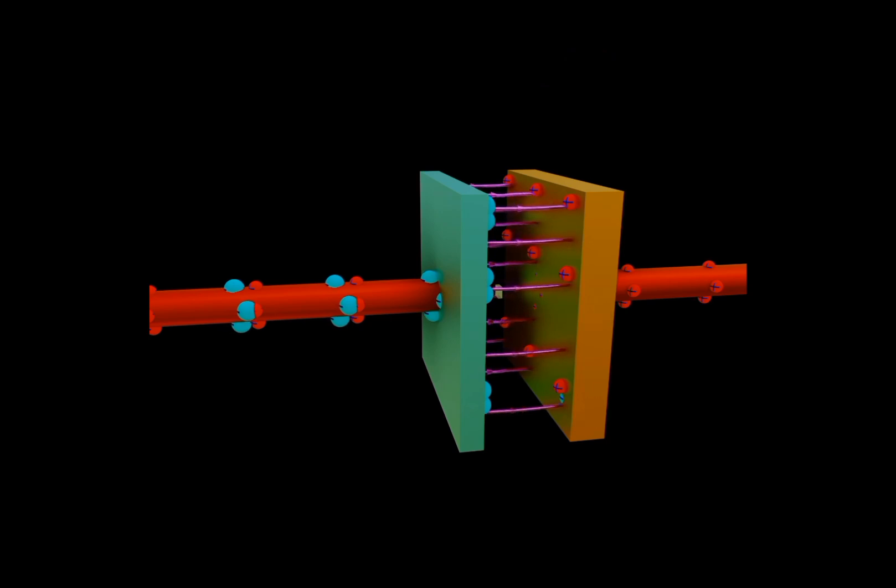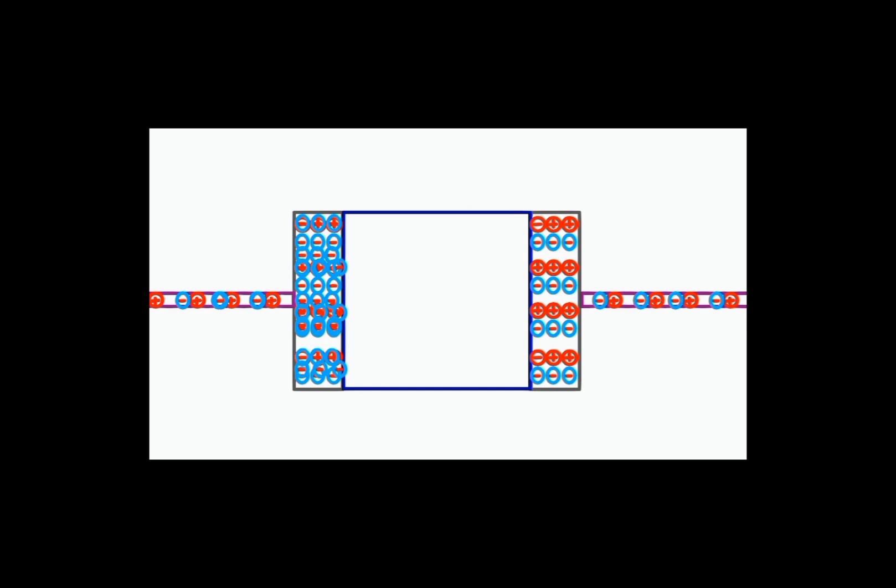The field across the dielectric materials creates the charges of the dielectric material to align. This helps in keeping one plate positive and the other plate negative. The electrons in one plate reduced, while the other plate increases.